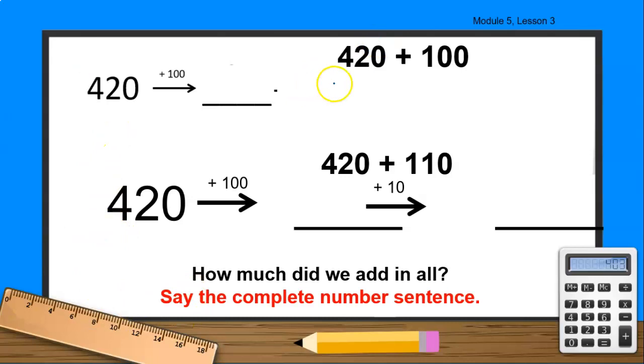So listen, what's 420 plus 100? Yes, 420 plus 100 gives me 520. 420, great job. So I want you to think about that because now 420 plus 100 plus 10 is, so let's see. 420 plus 100 gives me 520. Now 520 plus 10 is, yes, 530.